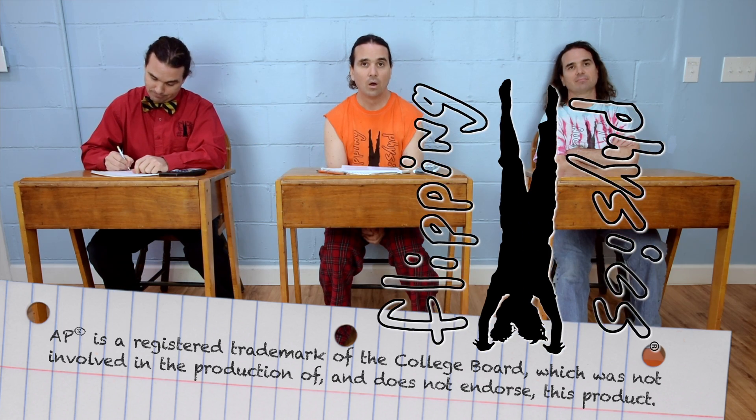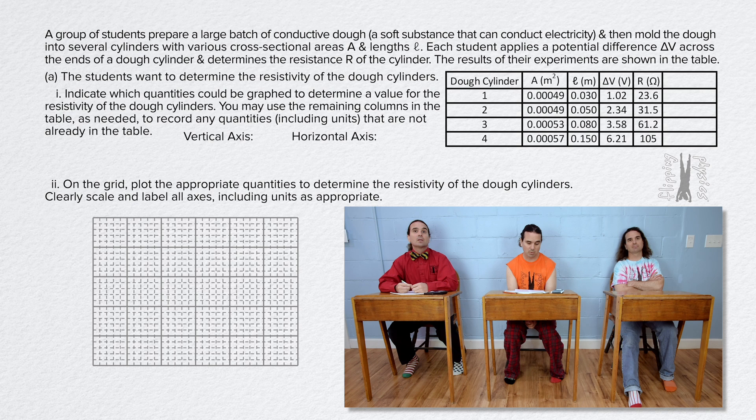Flippin' physics! A group of students prepare a large batch of conductive dough, a soft substance that can conduct electricity, and then mold the dough into several cylinders with various cross-sectional areas A and lengths L. Each student applies a potential difference delta V across the ends of a dough cylinder and determines the resistance R of the cylinder. The results of their experiments are shown in the table.